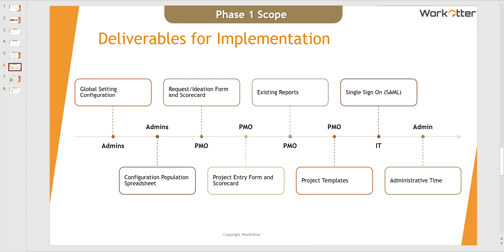Another thing you'll be working on is the configuration population spreadsheet. This is an interactive Excel spreadsheet that works directly with our WorkOtter solution and allows you to upload a brand new configuration with things like people and organization, roles, and many of the drop-down values that determine how your site looks and feels. It's also how you can do mass changes. Many clients will download this from WorkOtter — populated with their existing production data — make some changes locally, and re-upload it.